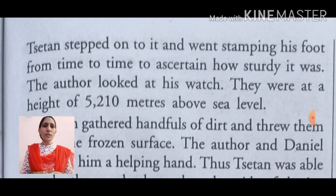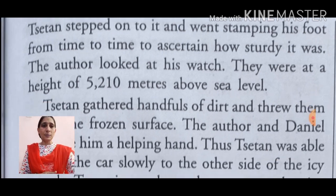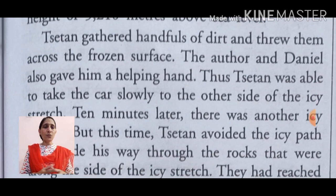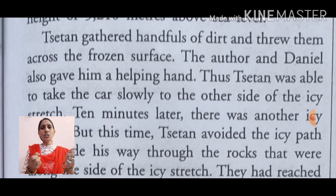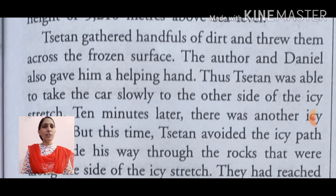The author looked at his watch — लेखक ने अपनी घड़ी पर देखा। They were at a height of 5,210 meters above sea level — अब वो समुद्र तल से 5,210 meters की ऊँचाई पर थे। Satan gathered handfuls of dirt and threw them across the frozen surface — Satan ने मुट्ठी भर जो महाँ पर dirt थी, धूल थी, उसको इकट्ठा किया और उसको जमी हुई surface पर फेंका। And the author and Daniel also helped him in this task।